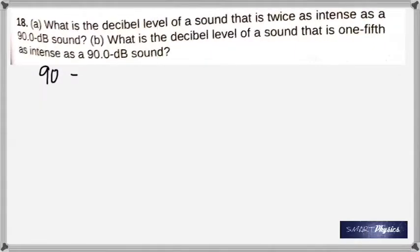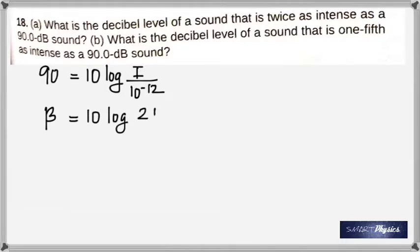Here again, what is the decibel level of a sound that is twice as intense as a 90 decibel sound? Twice as intense, you cannot double the decibel. First you will have to change it into watt per meter squared. So we're trying to find the I now with beta given. And I set this up as a ratio because in the second case it says it's twice as intense. So if it's I here, it's 2I next time.